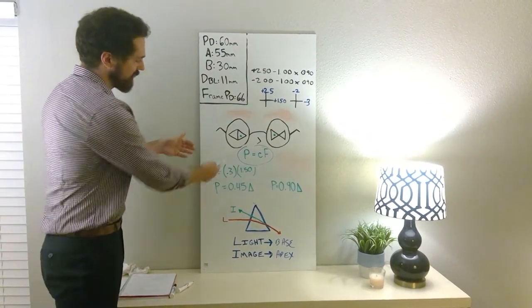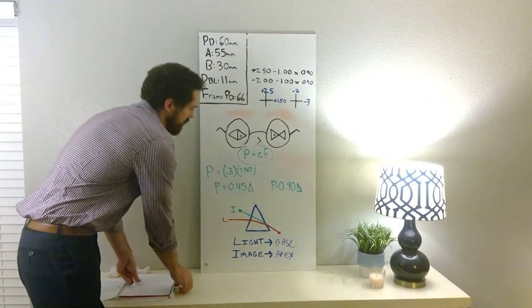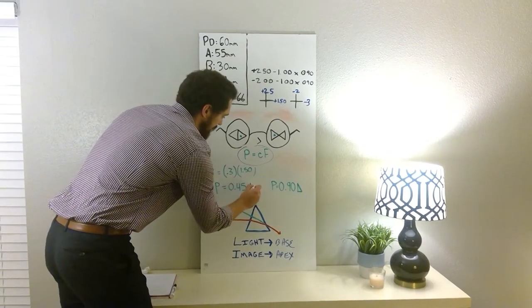So we have 0.3 centimeters of displacement times 1.5 power of the lens, gives you 0.45 prism diopters. What are we missing? The direction of the base, right? Let's look at our nice little drawing here. So for the right eye, it's going to be base out.